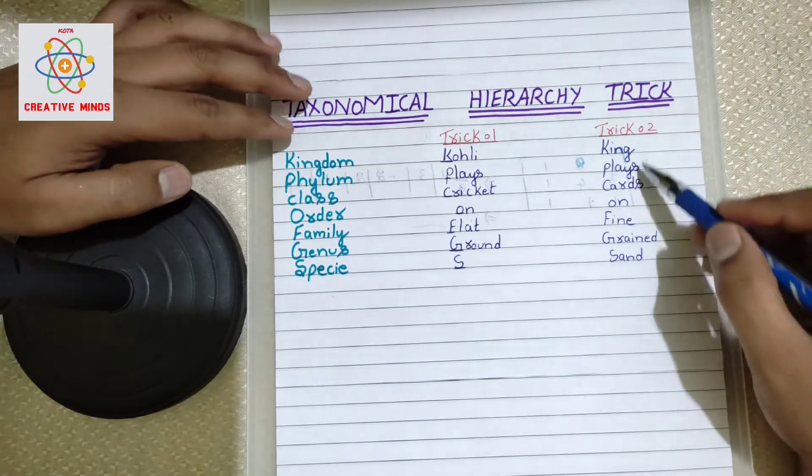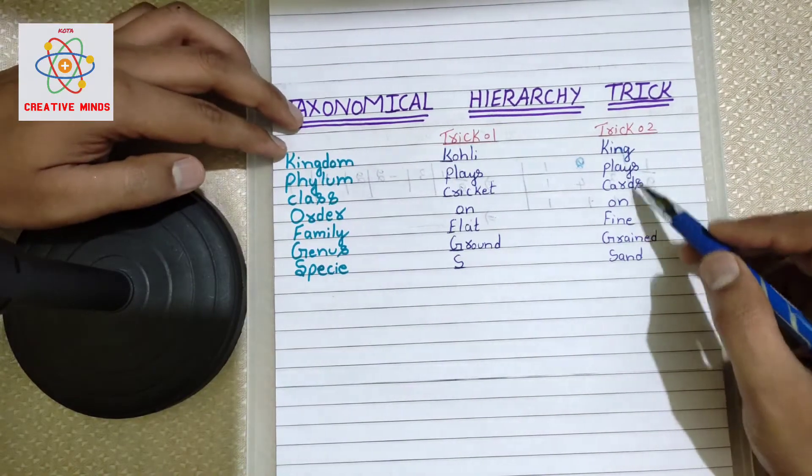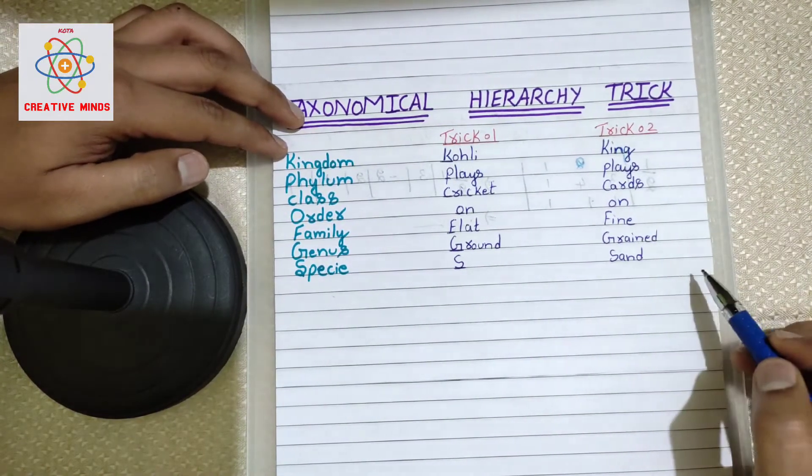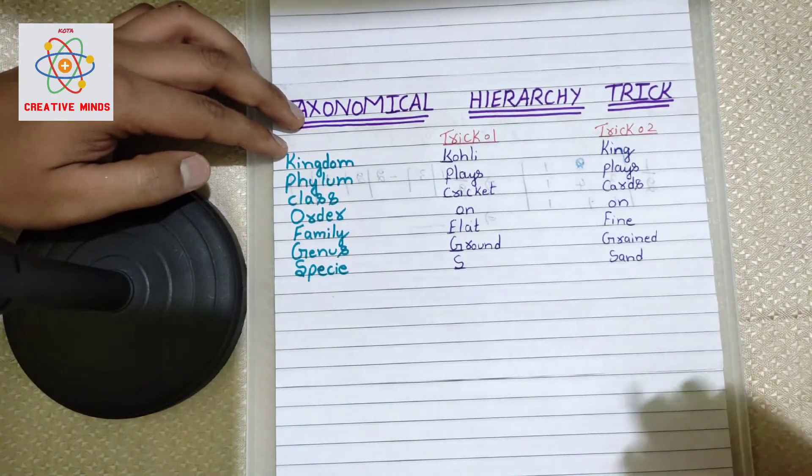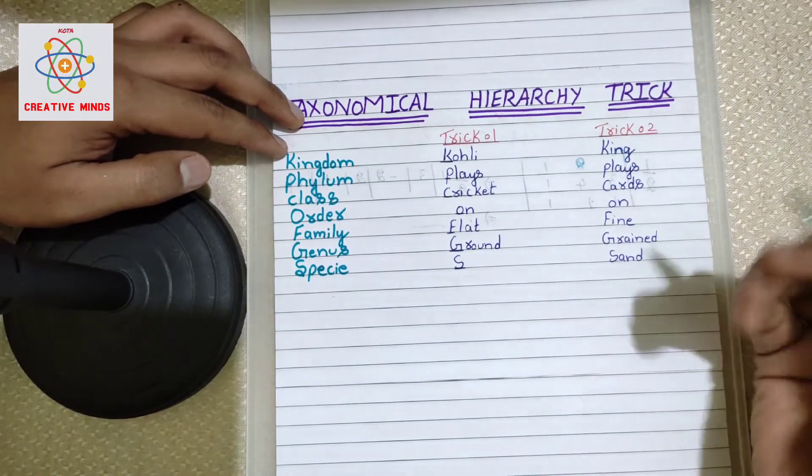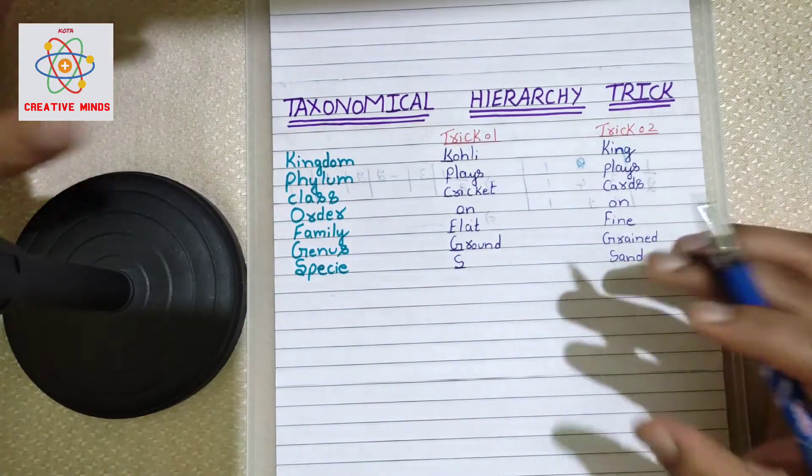We have a king who plays cards - you all know that card game, right? He plays cards on fine grained sand. The sand is finely grained, very smooth grained sand. He plays cards on fine grained sand. Very simple! Two shortcut tricks, and you can use any of them.